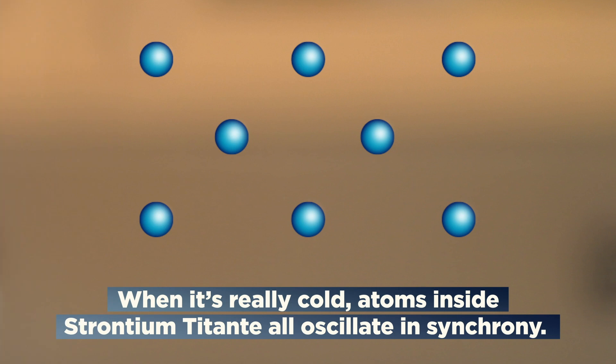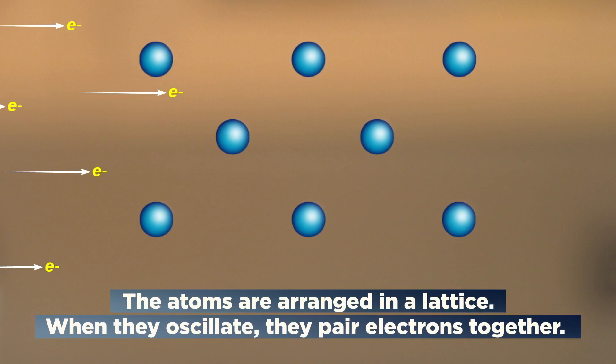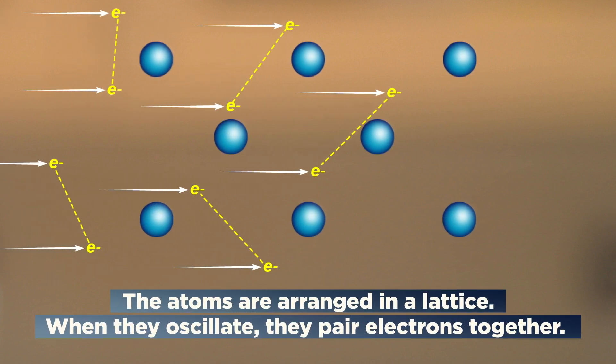When it's really cold, atoms inside strontium titanate all oscillate in synchrony. The atoms are arranged in a lattice. When they oscillate, they pair electrons together.